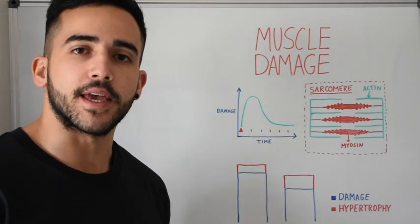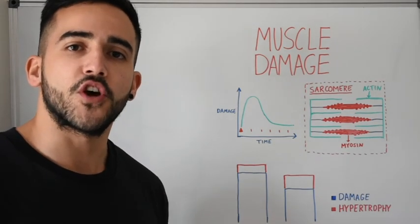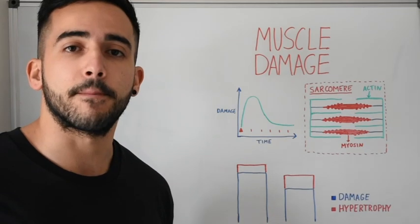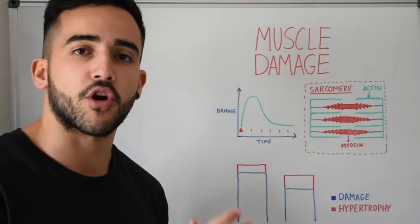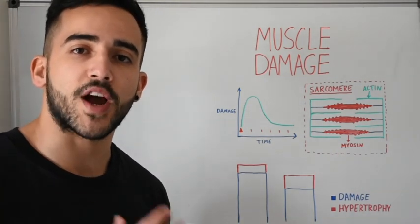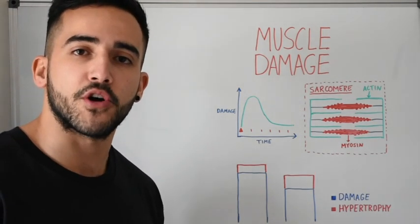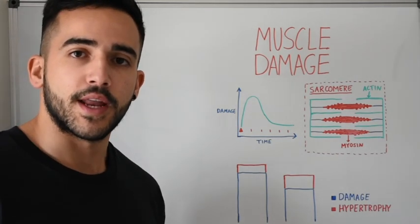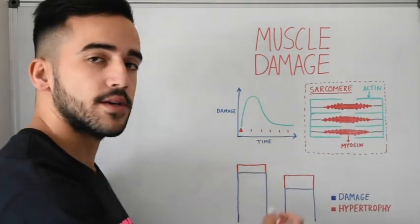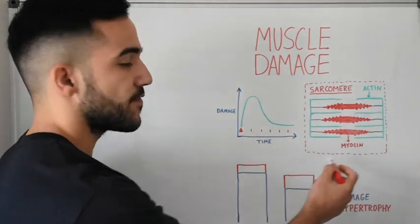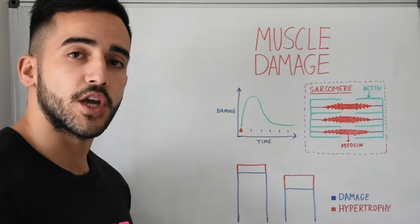To begin, we can generally classify muscle damage into two different types: the first being micro-level damage and the second being macro-level damage. In the context of resistance training, we are primarily concerned about micro-level damage, which is disruption to contractile protein homeostasis — damage occurring to the contractile proteins that make up the myofibrils. When I say contractile proteins, I'm referring to sarcomeres, which are made up of actin and myosin filaments.